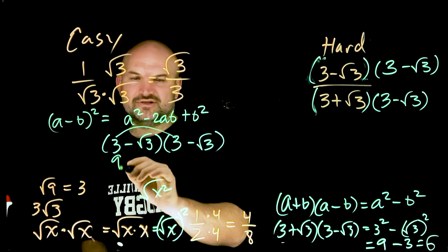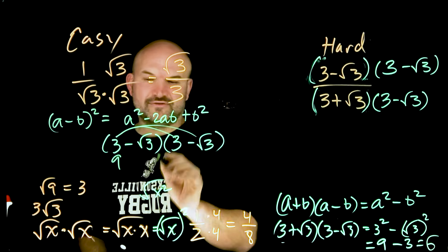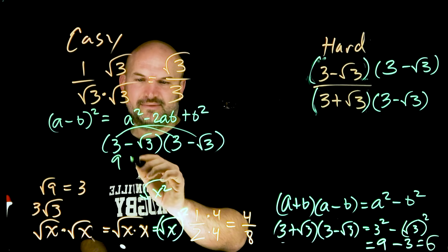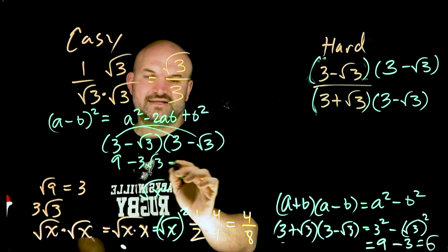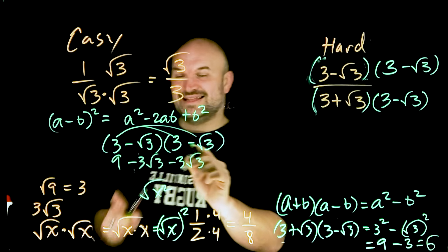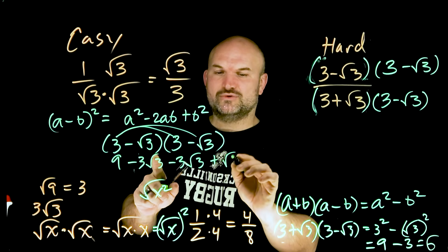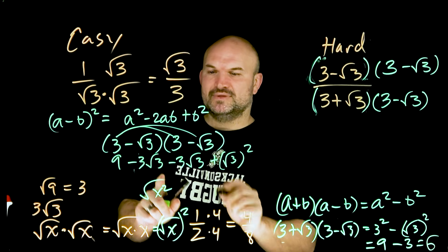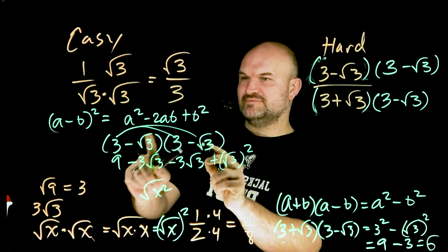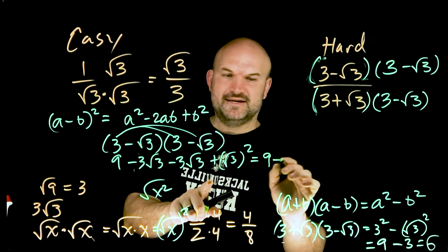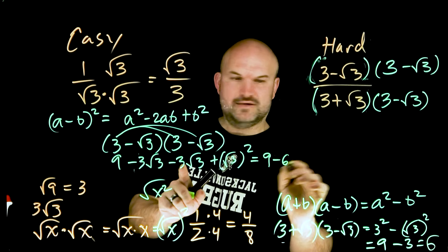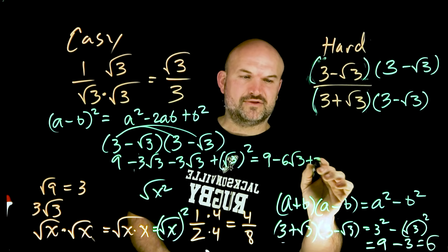Let's do 3 times 3. It's going to be 9. 3 times negative square root of 3 is going to be a negative 3 square root of 3. This is a negative 3 square root of 3. And then this is going to be a positive square root of 3 squared. You can see how I have my a times b, and I'm going to have two of them. So this is going to reduce. If I simplify this, it would be a 9 minus a 6 square root of 3, and then plus 3.